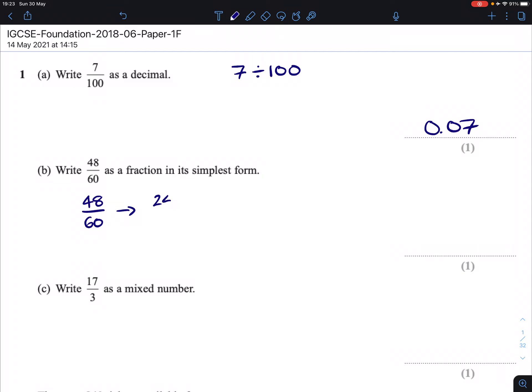Both top and bottom are even numbers, so we can divide both by 2. We can then divide both by 2 again. And then the last step here is dividing both by 3.